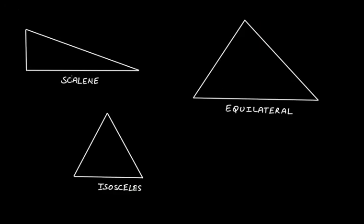When it comes to a triangle, if it is a scalene triangle then it cannot be equilateral because all the sides are not equal to each other. The first condition itself fails, so this is not a regular polygon — it is irregular.